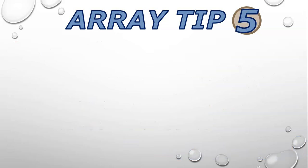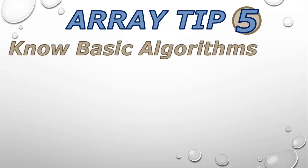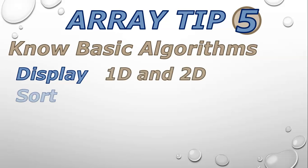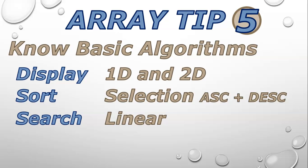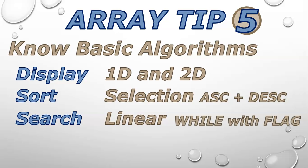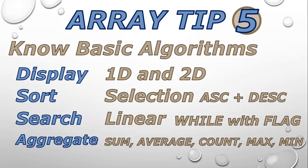Array tip number five: know your basic algorithms. These algorithms are easy to remember and help particularly with 1D arrays, but you can also apply them to 2D arrays. You need to know how to display both a 1D and a 2D array. Know how to sort an array — I would suggest learning the selection sort and how to modify it for ascending and descending order. Know how to search for a value using the linear search, which uses a while loop with a flag and works whether the data is sorted or not. Know your aggregate functions: how to sum values, find the average, count the values, and find the biggest and smallest values — for both 1D and 2D arrays.